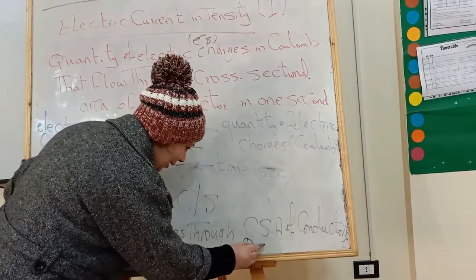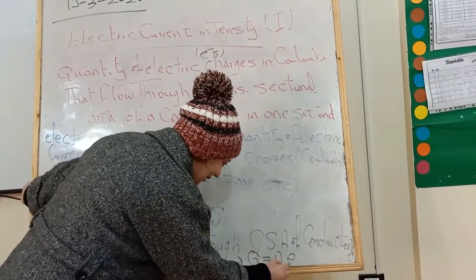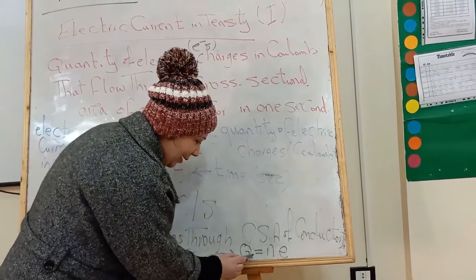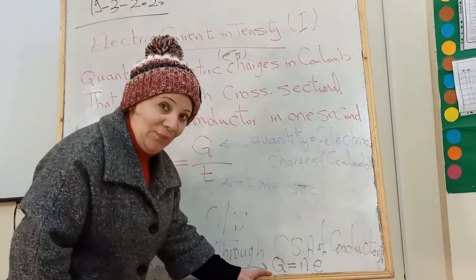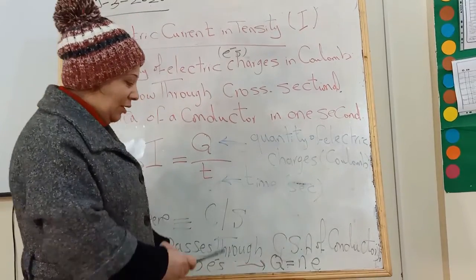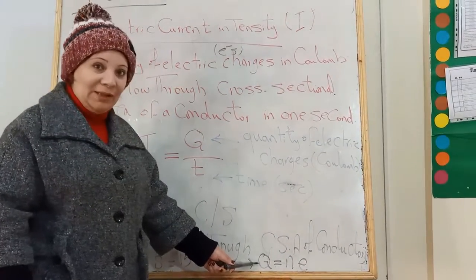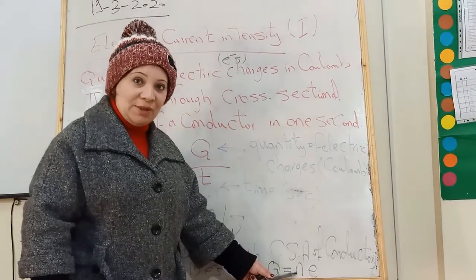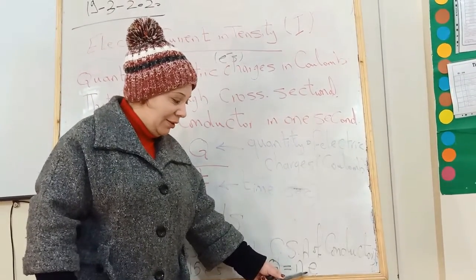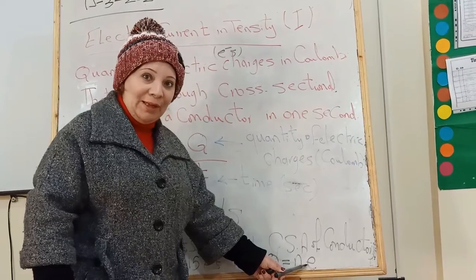Q equals N times E. Q is quantity of electric charge. N is the number of electrons. E is the symbol of electric charge for electrons.